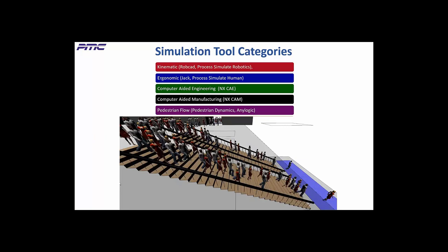Pedestrian flow tools like Pedestrian Dynamics and AnyLogic model the behavior of people moving on sidewalks, stairs, and escalators in stores, stadiums, airports, etc. In normal and evacuation scenarios, pedestrians are aware of others, alternative pathways, and obstacles. Like in the real world, their behavior is random, including walking at different speeds, going around obstacles in different ways, and passing each other. The benefits include greater safety, reduced costs, and improved throughput of people through a facility.